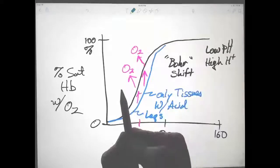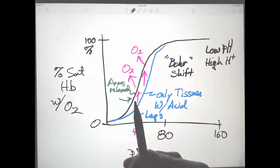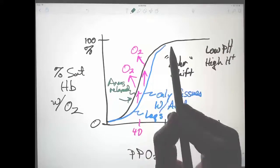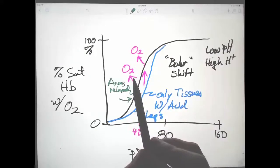But if your arms are not working, if your arms are relaxed, then this is the curve for your arms. So only in the tissues that are particularly acid will your oxygen be released at a higher amount.